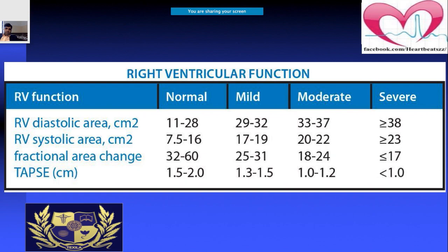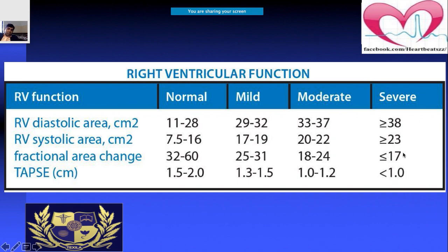Right ventricular ejection fraction is also important. For RV assessment, you measure the RV diastolic area, systolic area, and fractional area change. TAPSE is a key parameter — it should be in your mind: less than 1 cm is severe, 1.0–1.2 cm is moderate, 1.3–1.5 cm is mild, and normal is 1.5–2.0 cm.